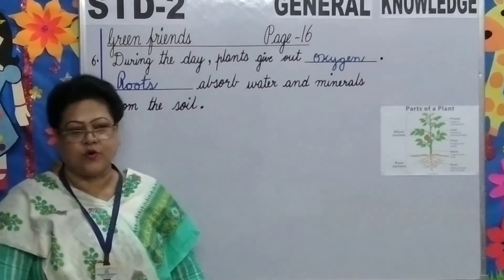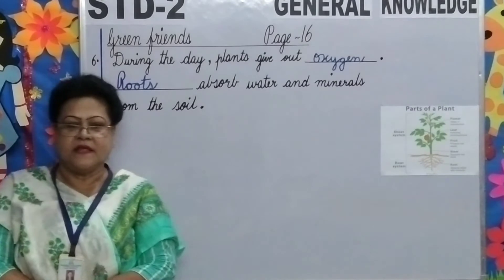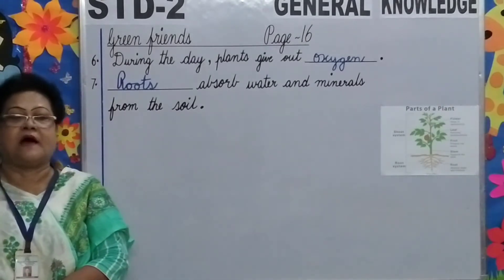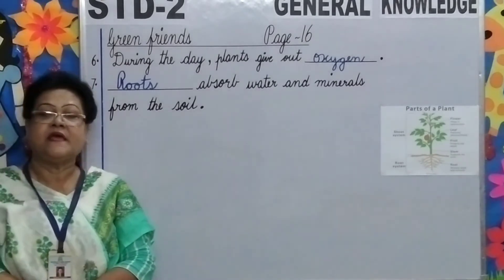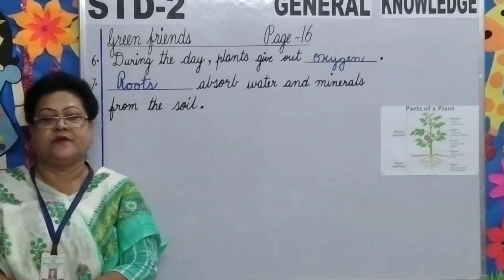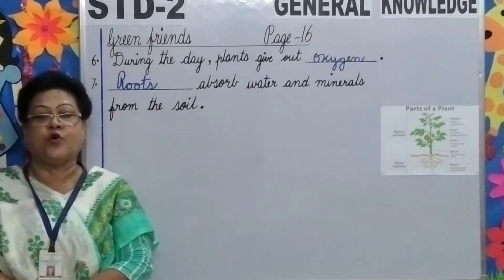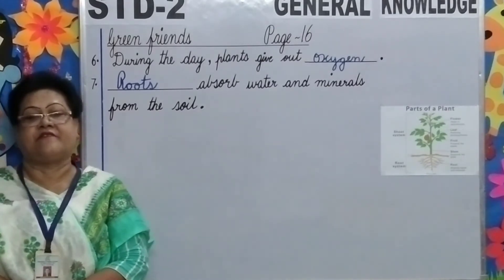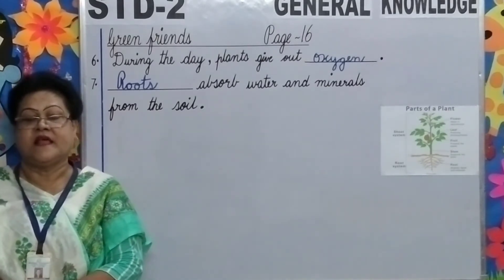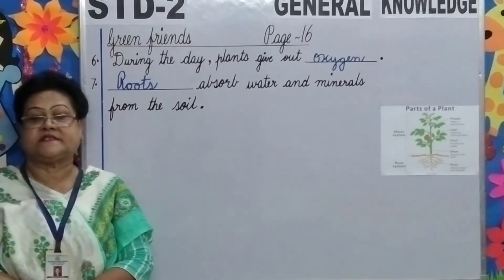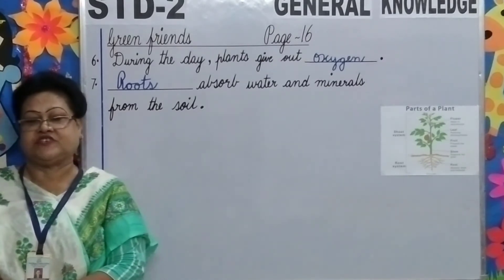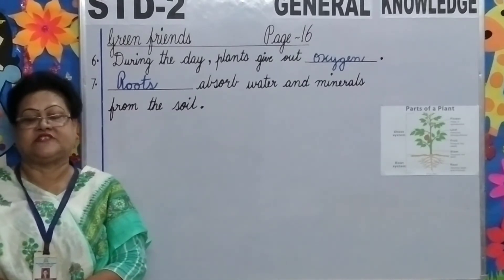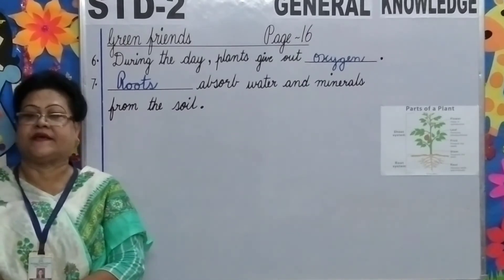Do you all know, children? The different parts of a plant can be eaten. We eat roots like carrots and radishes, leaves such as cabbage, and stems such as sugarcane.